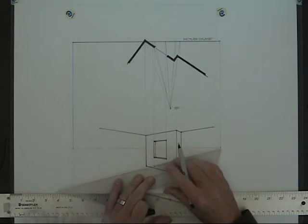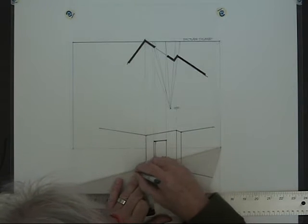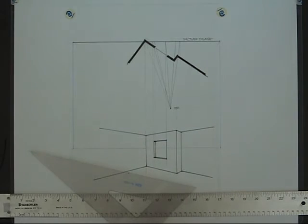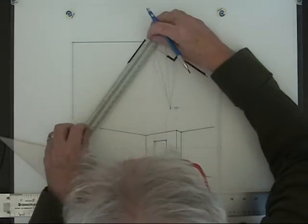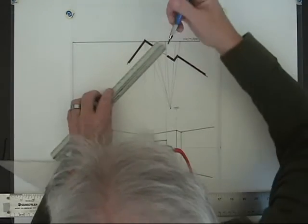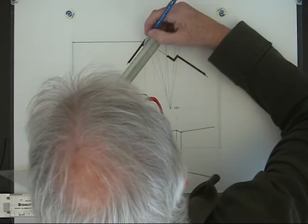Now to complete this drawing, just for demonstration purposes, I'm going to grid off the walls. So again if I use my scale up in the top view, one quarter inch, and I'm just going to draw a two foot grid.